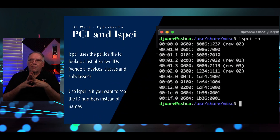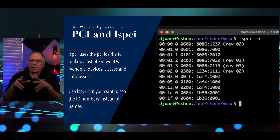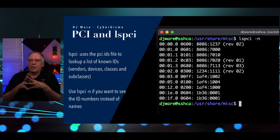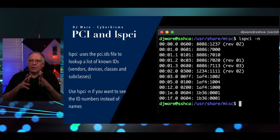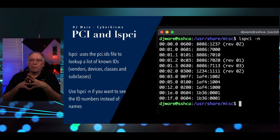If I ask for lspci with numeric values, I get a column of numbers with the kernel ID and the kernel-assigned device. The third column begins with something like 8086:1237 — so the first value is the vendor ID and the second is the device ID. I have some device IDs that say 1AF4, so we're going to look at those and see what that is. I don't know who that vendor is, but we're going to go look it up.